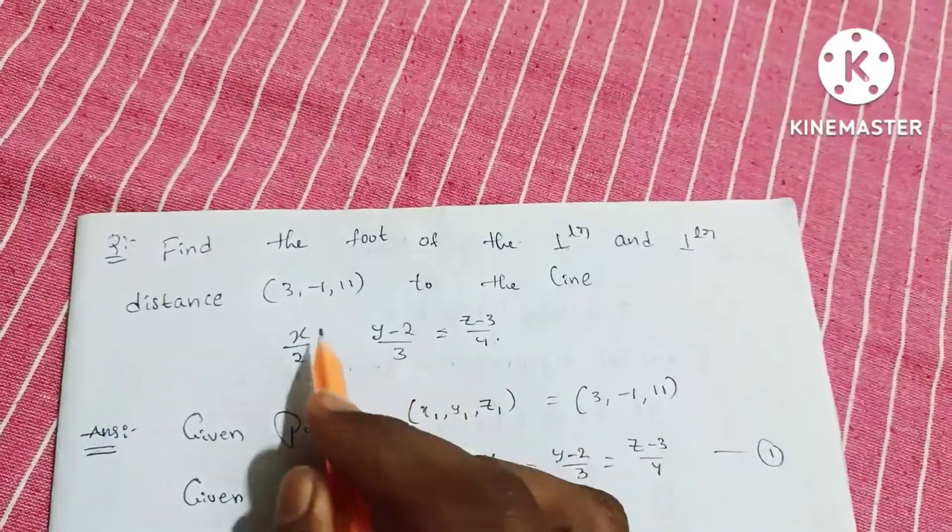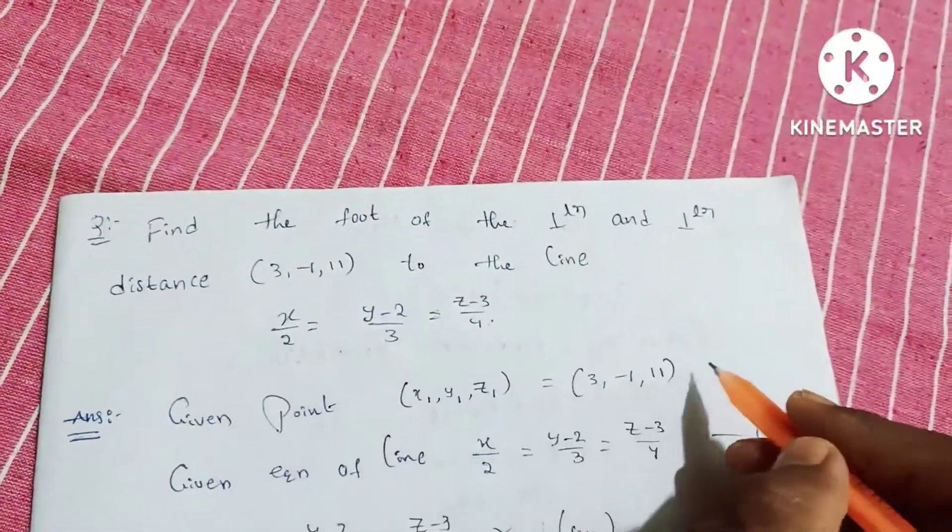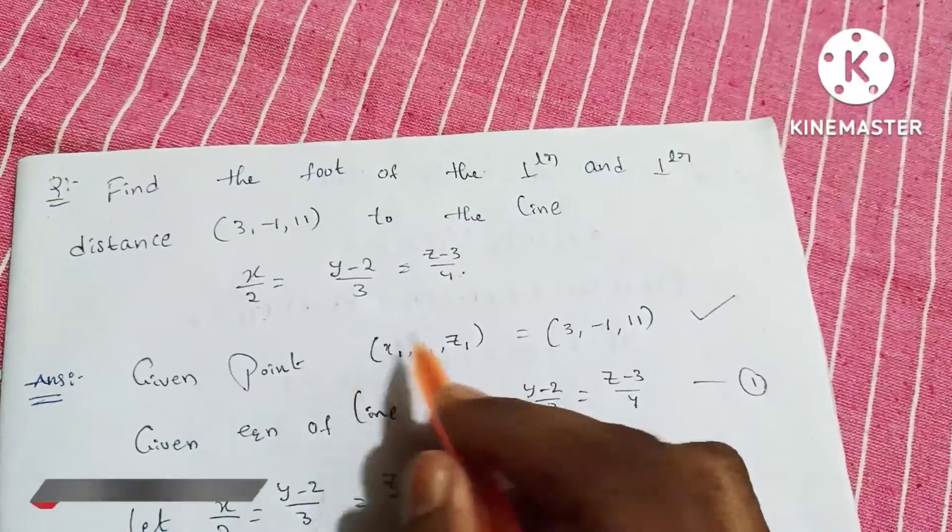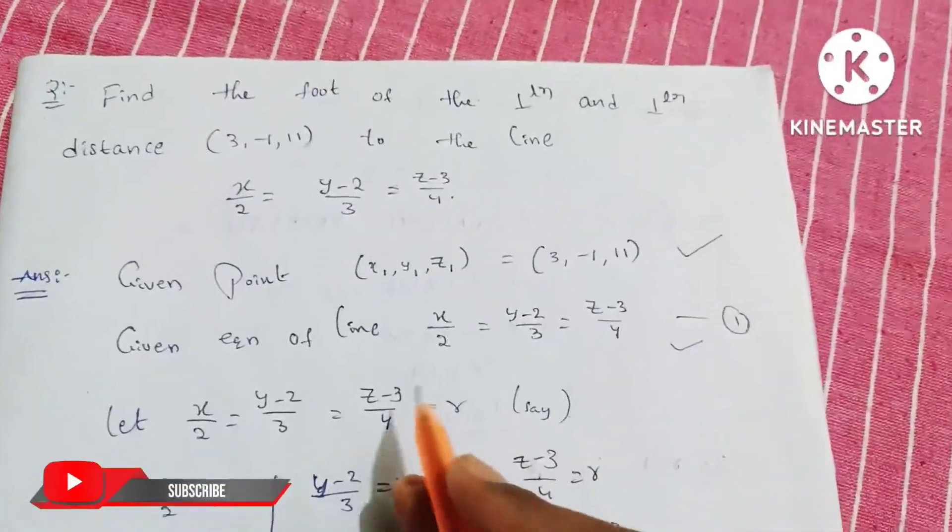One line is given, one point is given - the foot of the perpendicular and perpendicular distance we need to find. Given the point and given the equation of line, let's write the line equation.